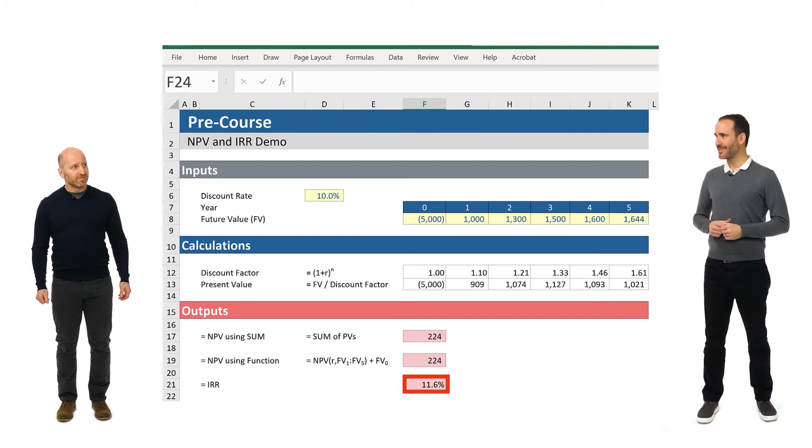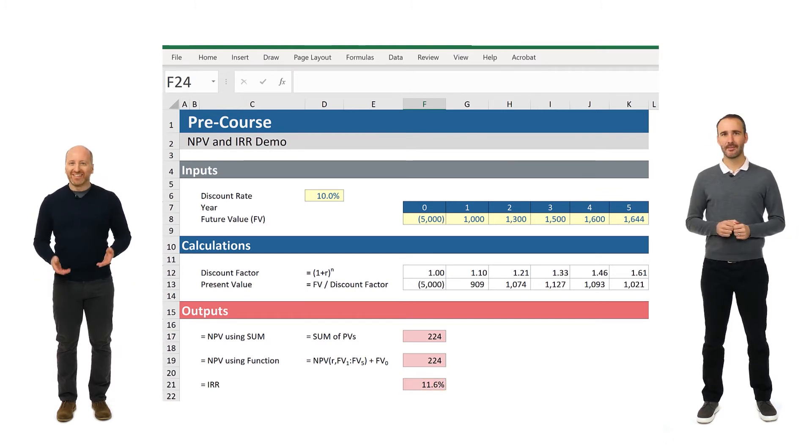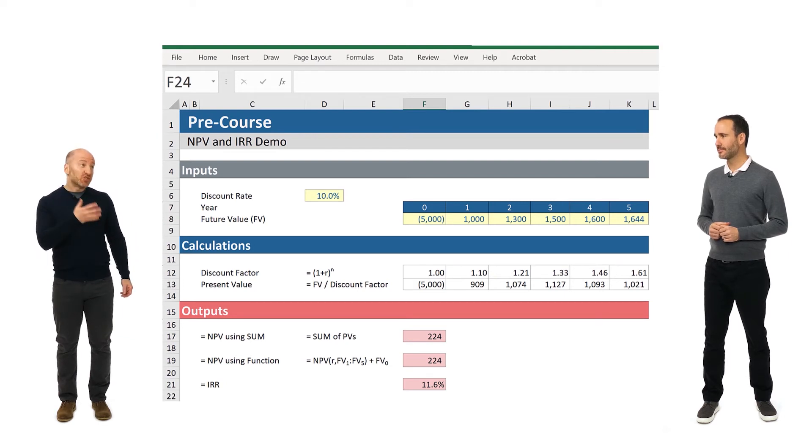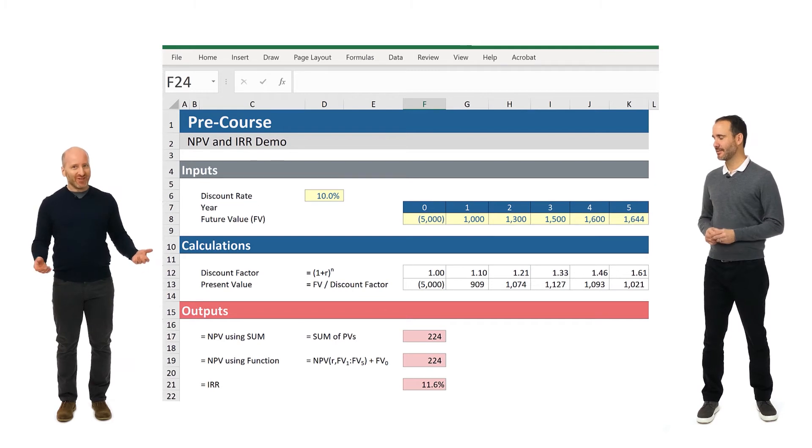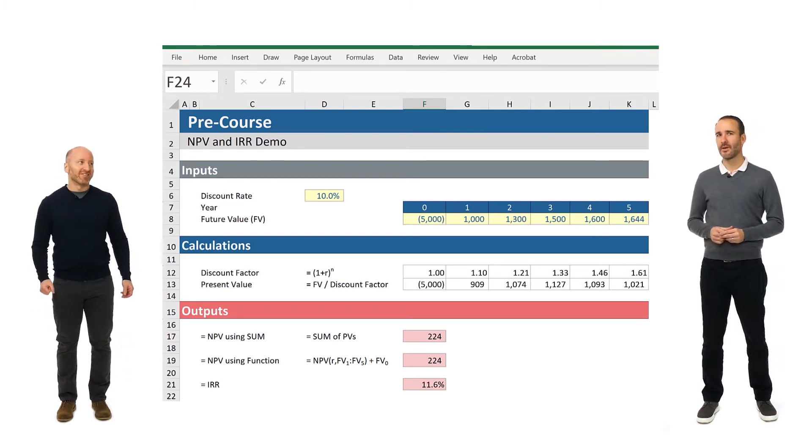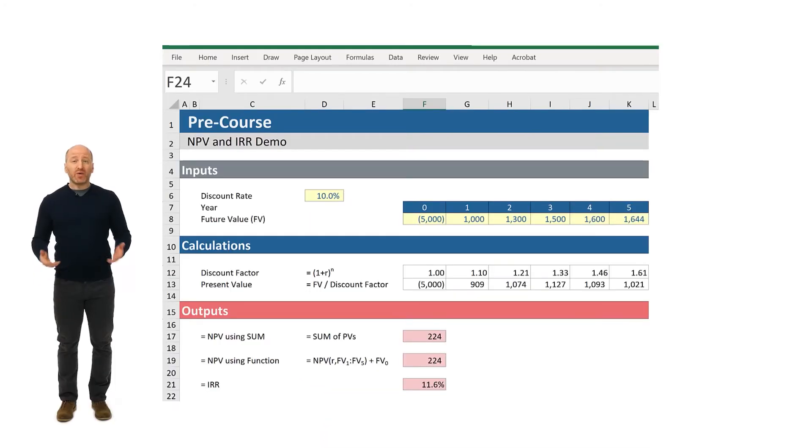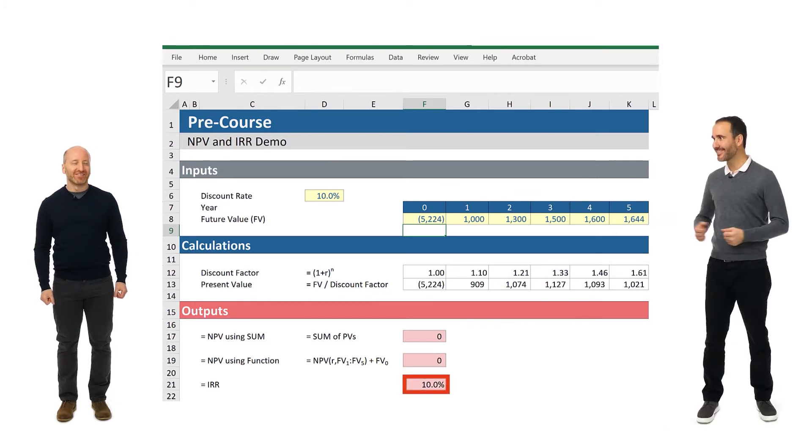And what would happen if you were to pay 5,224 for the investment? My NPV will go to zero. Yes, of course. But we already knew this. What will happen to your IRR? If my NPV is now zero, then I guess my IRR will be 10%. Exactly. Let's try that out. I'm going to go into cell F8 and change the investment price to 5,224. And look at that. The NPV is zero and the IRR is 10%. Amazing.